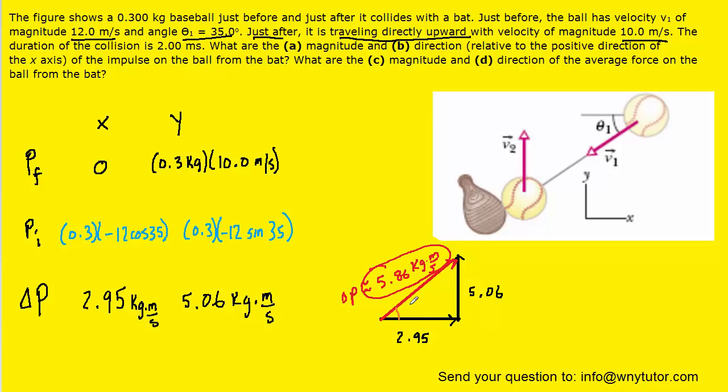We also want the angle for part B. And of course, we can use the inverse tangent to find that angle, since we have the opposite and adjacent sides labeled. And when you compute that, you should get approximately 59.8 degrees. And that angle you can see from the picture would be measured counterclockwise from the positive x axis.